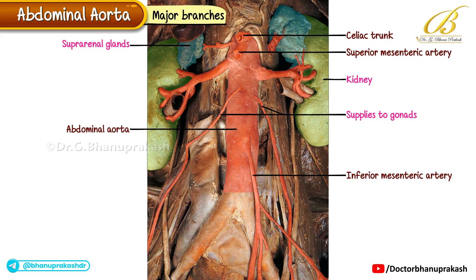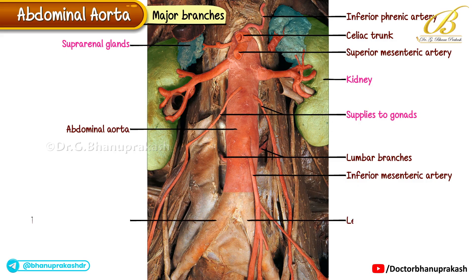Paired posterolateral lumbar branches supply the abdominal wall. The inferior phrenic artery can also be seen. The abdominal aorta terminates at the level of the right and left common iliac arteries.